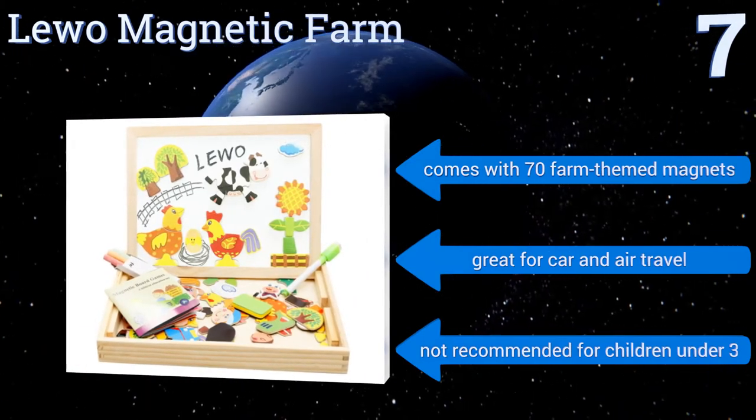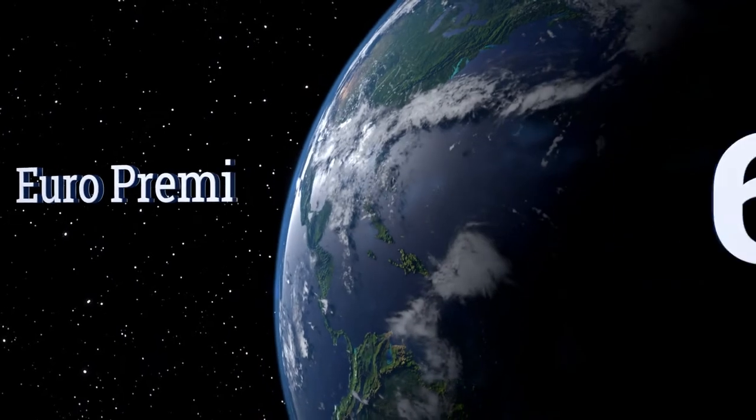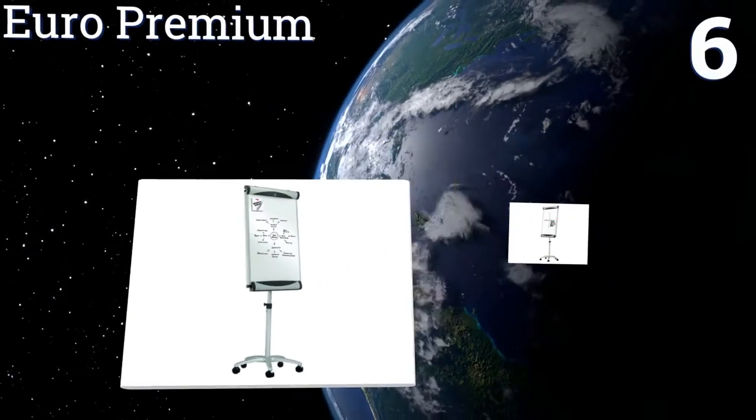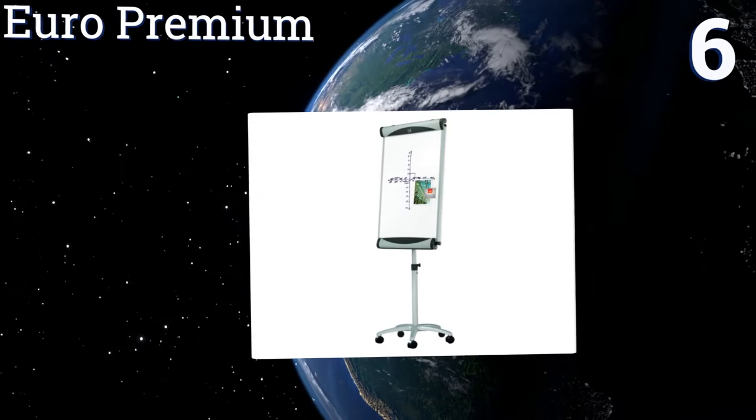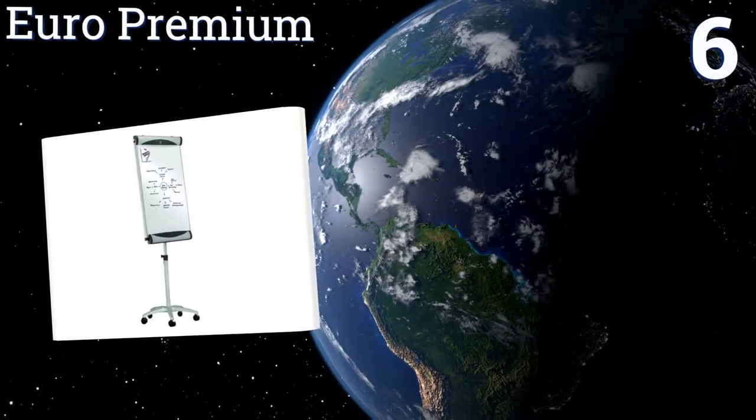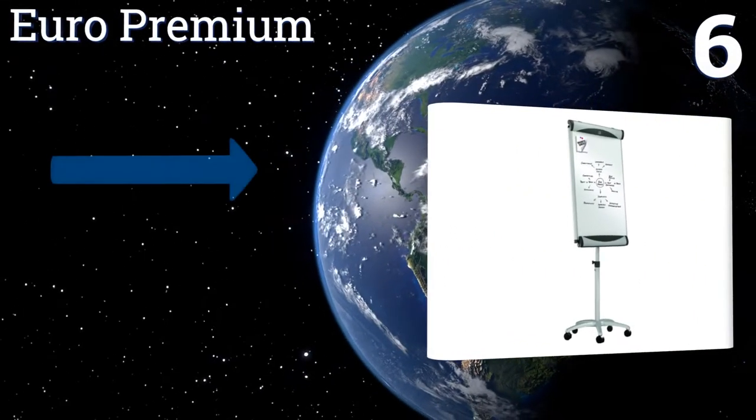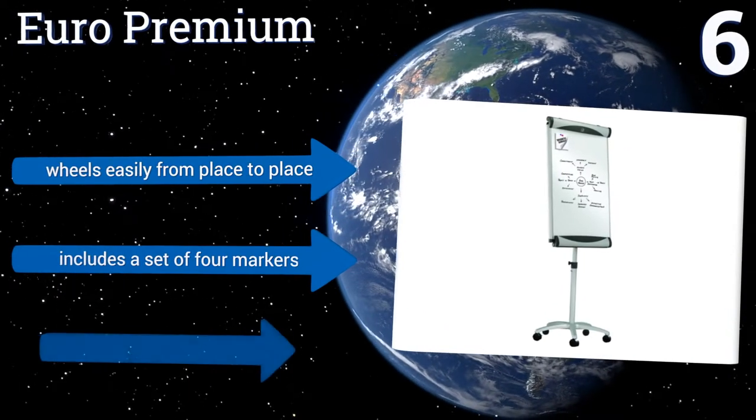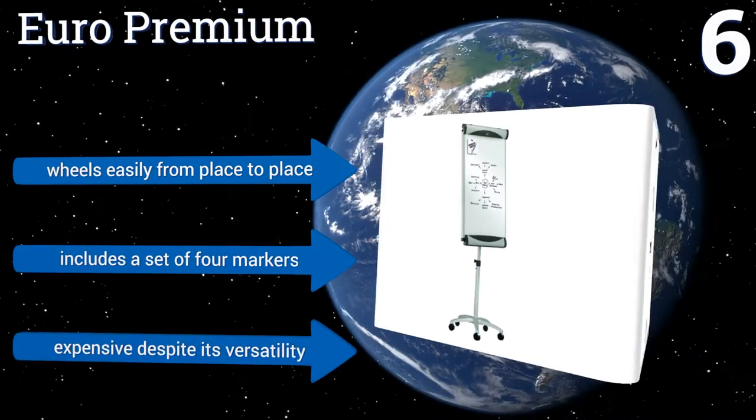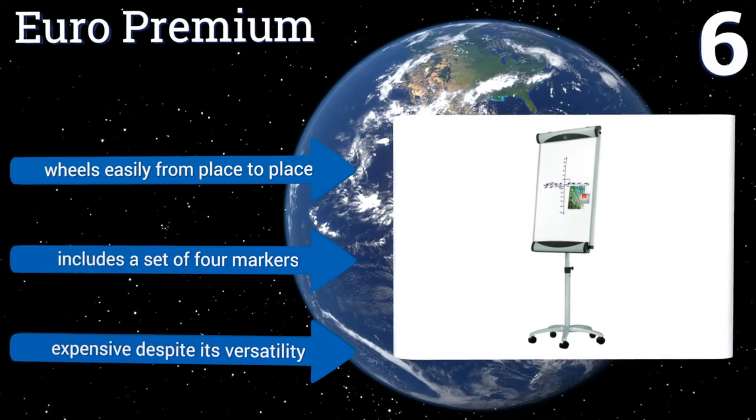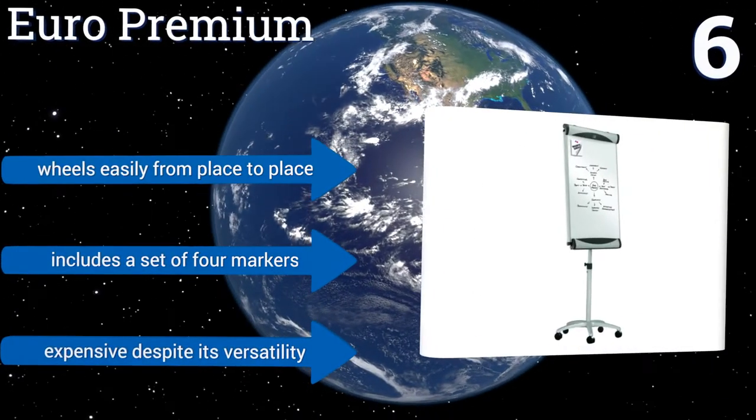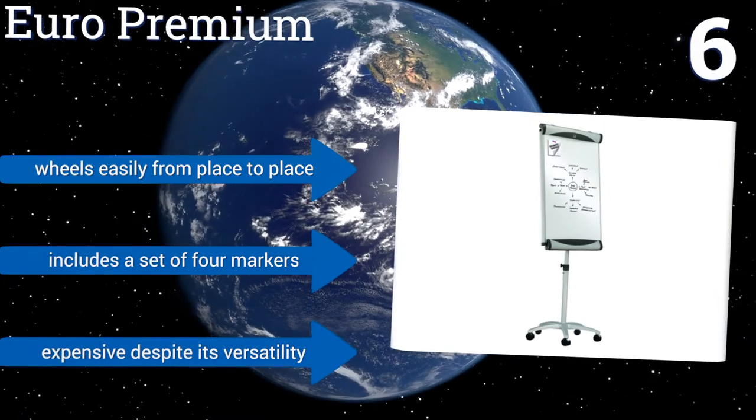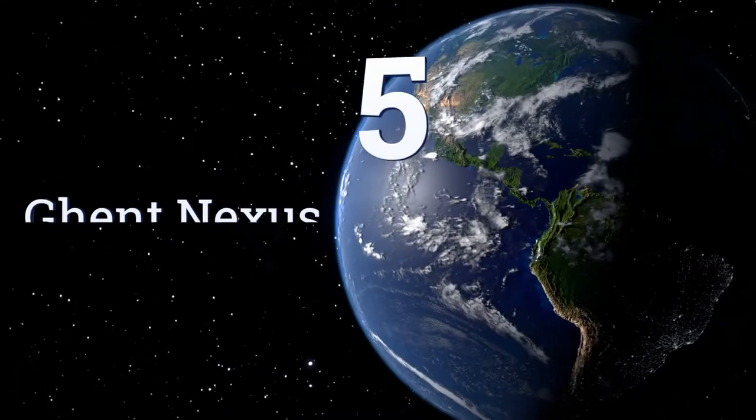At number six, the Euro Premium offers a porcelain surface that will not scratch, dent, stain, or mark. The top mount is adjustable and it comes with clamps for posting charts. The base rests on four casters which lock in place but still don't make the frame feel very stable. It does wheel easily from place to place and includes a set of four markers. However, it is expensive despite its versatility.